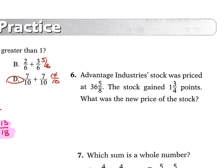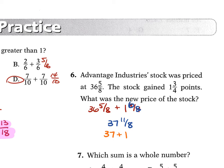Problem 6: Advantage Industries stock was priced at 36 and 5 eighths. It gained 1 and 3 fourths points. Adding: 3 fourths becomes 6 over 8. So 5 over 8 plus 6 over 8 is 11 over 8. Adding whole numbers: 36 plus 1 is 37. Then 37 plus 11 over 8 equals 37 plus 1 and 3 eighths, giving a new price of 38 and 3 eighths.